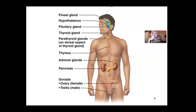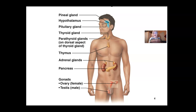Below the hypothalamus is the pituitary gland. There is an anterior pituitary gland with several hormones, and a posterior pituitary gland with only two hormones you need to memorize and understand: ADH and oxytocin. We will go over those hormones shortly. For now, this is a superficial cursory review of all the glands.